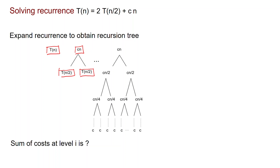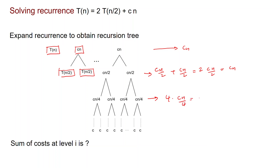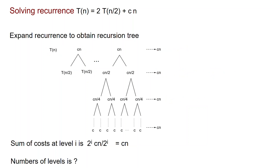We now group costs by level. At the first level we have C·N. At the second level we have C·N/2 plus C·N/2, which is just C·N again. At the next level we have 4 times C·N/4, which is again C·N. In general, the sum of costs at level i is 2^i times C·N/2^i, which equals C·N. So every level has the same cost: C·N.